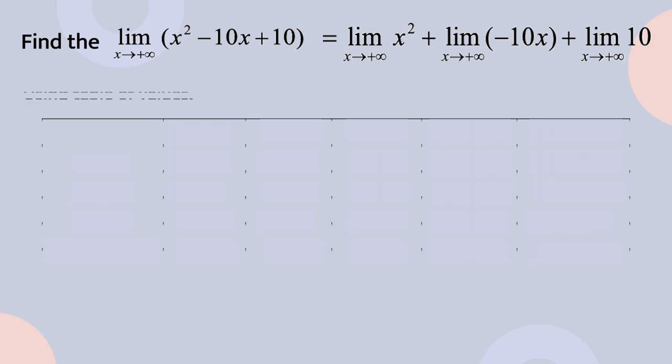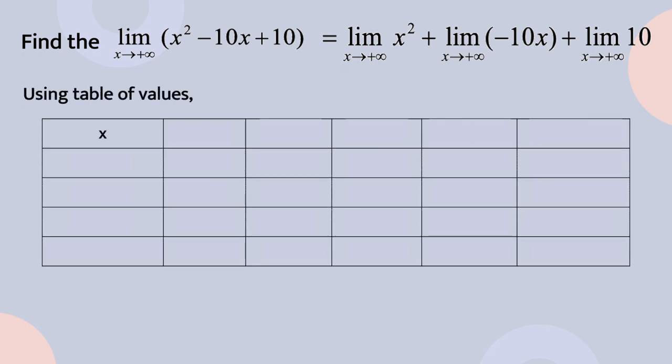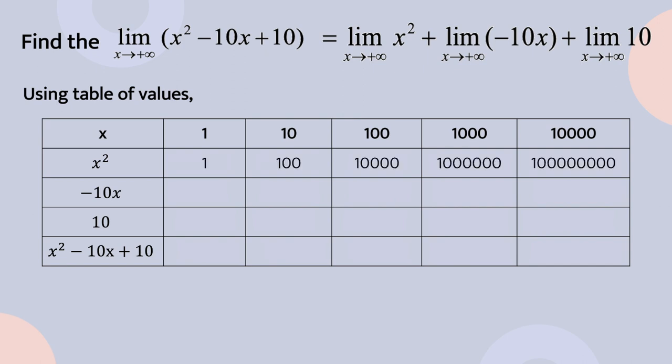Using a table of values, let us compute for the limit of the given function. Let us use 1, 10, 100, 1000, and 10,000 for the values of x. Evaluating x², we're going to have the following values. Evaluating −10x, we're going to have these values. Evaluating 10, which is a constant, would always be equivalent to 10. Adding and subtracting the results vertically, we will come up with these values.